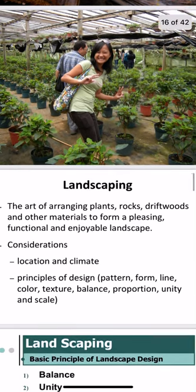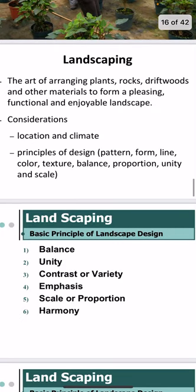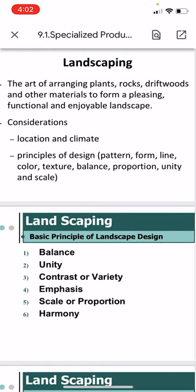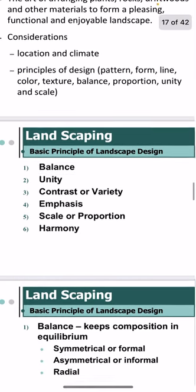Another aspect of ornamental production is landscaping. It is the art of arranging plants, rocks, driftwood, and other materials to form a pleasing, functional, and enjoyable landscape. Considerations include location and climate, and the principles of design which include pattern, form, line, color, texture, balance, proportion, unity, and scale.